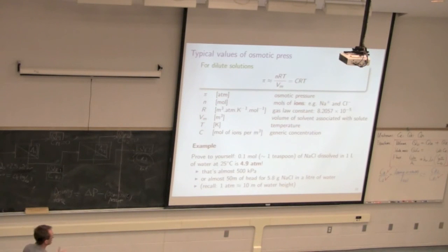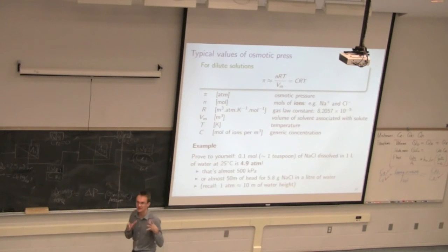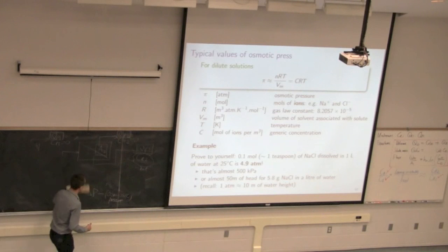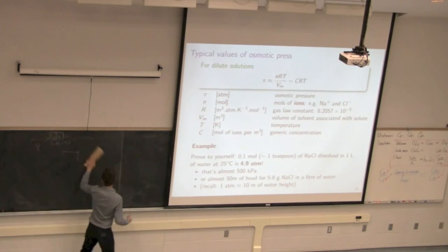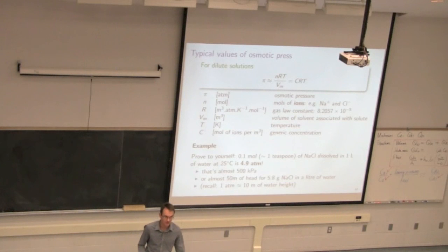So take a minute and calculate and prove to yourself that one teaspoon of salt dissolved in a liter of water. It's a tiny amount of salt. A teaspoon in a liter of water gets an osmotic pressure of five times the atmospheric pressure. That's 50 meters of head and one teaspoon of salt and one liter of water. Prove to yourself that.